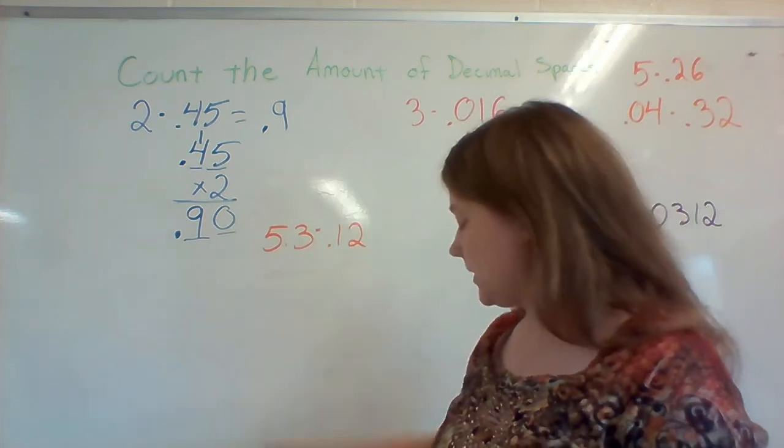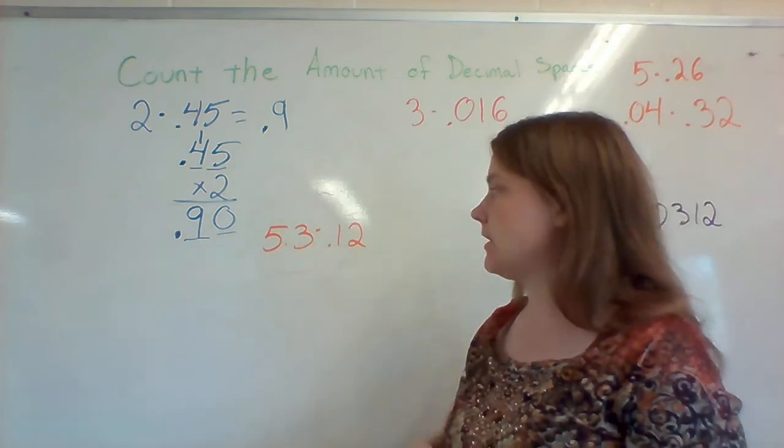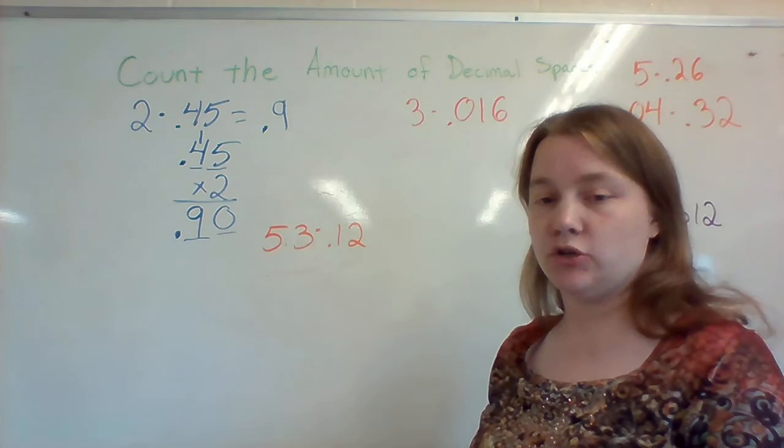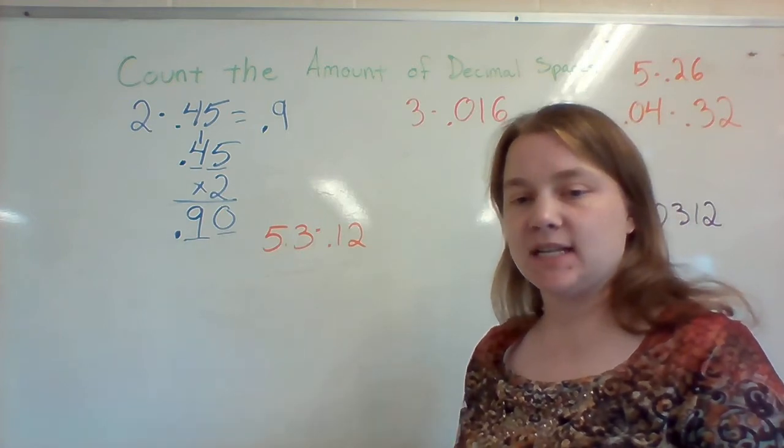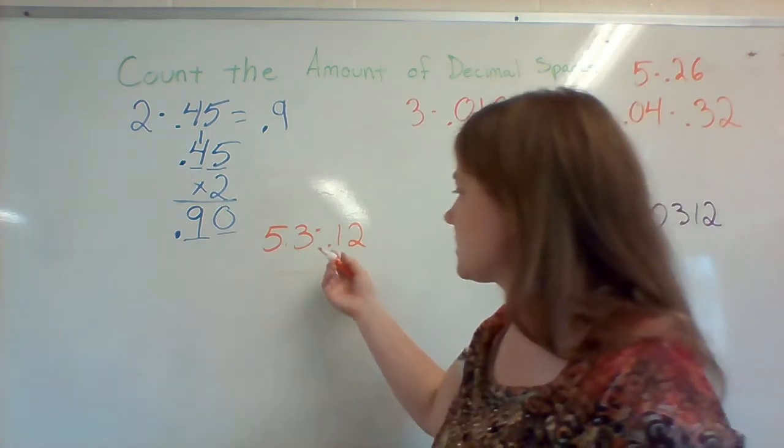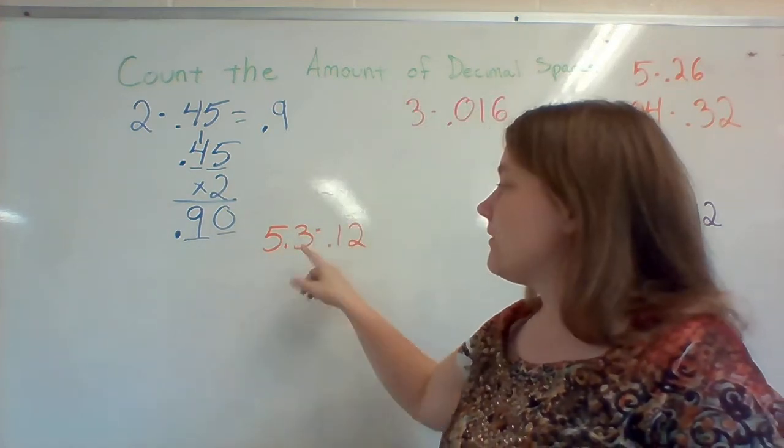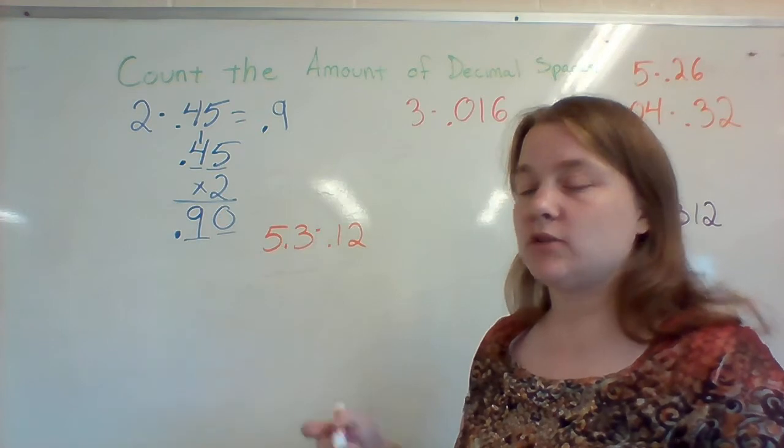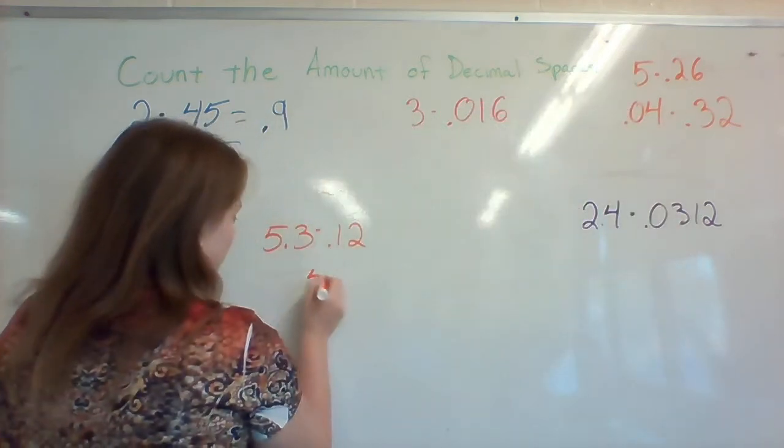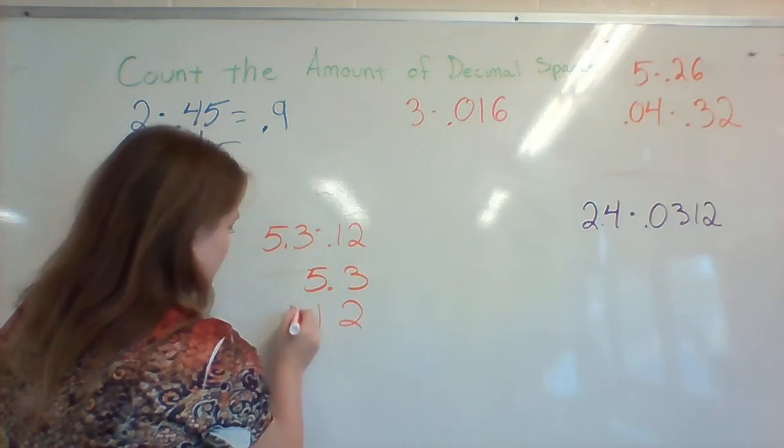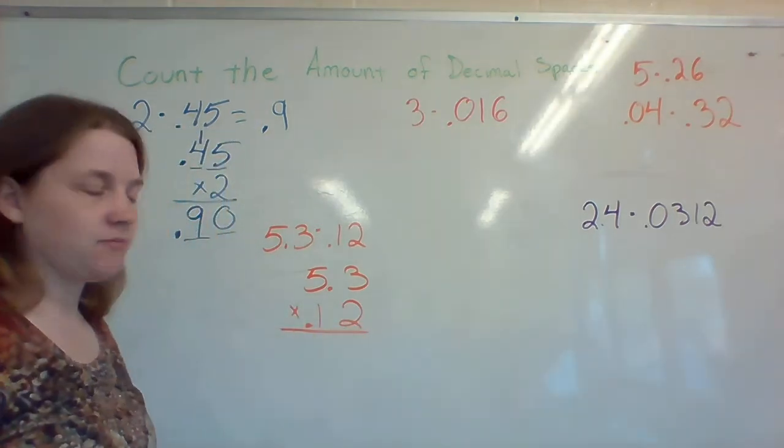Let's go ahead and look at another one. Let's look at 5 and 3 tenths times 12 hundredths. Let's go ahead and set this up first, just like there are no decimals. There is a decimal there, it was just kind of invisible. So 5 and 3 tenths times 12 hundredths, let's set that up. I have my decimals, I'm ready to go.